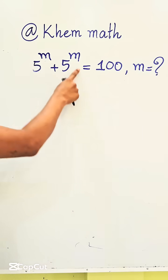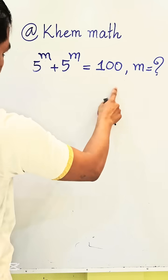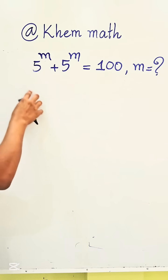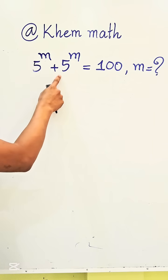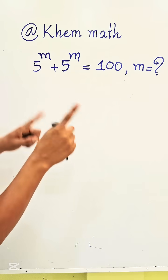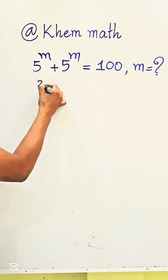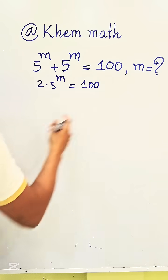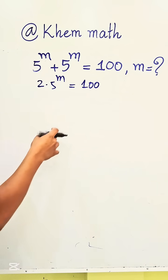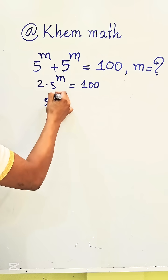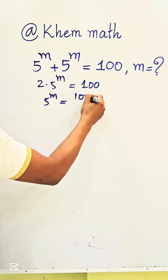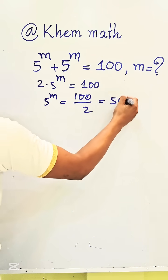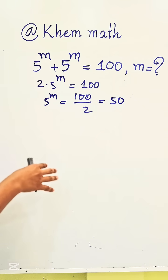5 power m plus 5 power m equals 100. This is the exponential equation. Since the two terms are the same, we get 2 times 5 power m equals 100. Now we divide both sides of this equation by 2, so we get 5 power m equals 50.